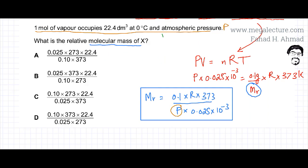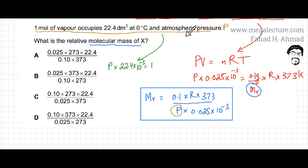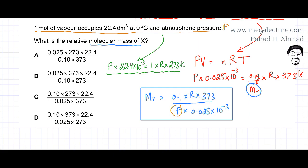Substituting into PV = nRT for the second condition: P is atmospheric pressure, V is 22.4 times 10 to the power minus 3 m³, n is 1 mole, R is 8.31, and T is 0 degrees centigrade, which equals 273 Kelvin. This gives a second expression involving P.